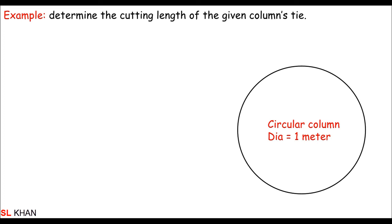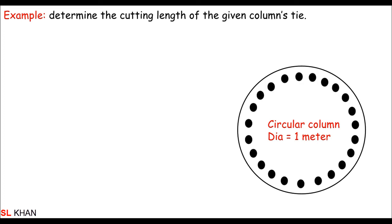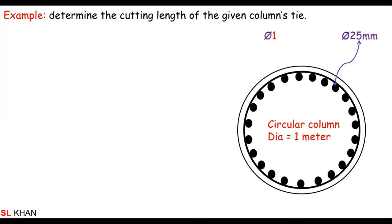Suppose we are asked to determine the cutting length of a given column tie. The column diameter is 1 meter, the main bars are 25mm, the tie is 10mm, and the hook length is 8 times the diameter of the tie. This value is given by the designer and may vary — it is not a fixed constant. The concrete cover is 25mm.